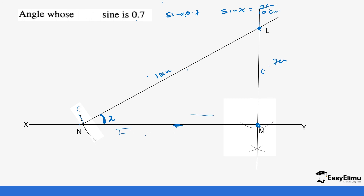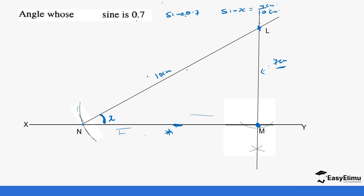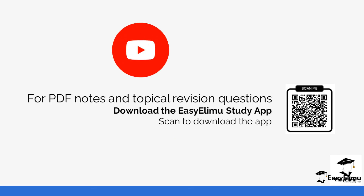You get to point M, then measure from M to point L as 7 centimeters. At L, you open your compass to 10 centimeters and make an arc on the line. This arc can fall on any point since we do not know the exact measurement of line NM. Where you make the point, that is where the distance between M and L is 10 centimeters. That's how we solve for sine of angles — both by measuring accurately and by calculating. You can get more practice questions and notes in the app. See you in the next lesson.